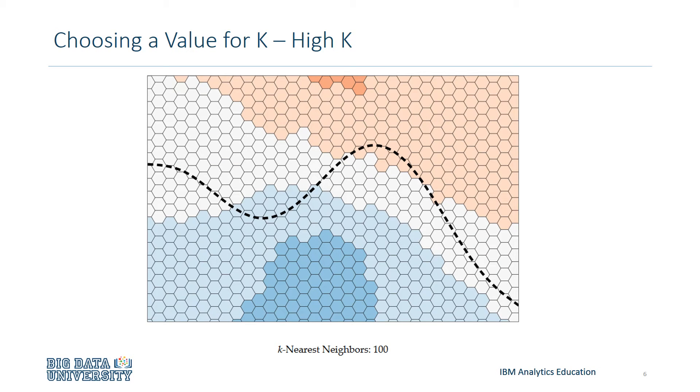Now, on the opposite side of the spectrum, if we choose a very high value of k, such as k equals 100, then the model becomes overly generalized. This makes it difficult to distinguish between the two regions if a point appears between the two regions. The white region is a spot where neither blue nor red can be decided. So let's say we have an out-of-sample data point here. Can you tell which region that belongs on? Probably not. And if we look at the black dotted line that we want to follow, we can see that the model doesn't follow this at all.